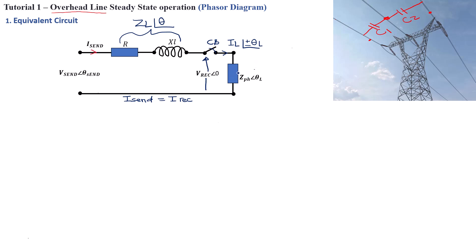Whether the load is purely resistive, capacitive, or inductive, or a mix of all, that defines the current angle. That cannot be equated to the angle from the sending end. Now, having defined all the parameters we need for this short transmission line, we can go ahead and draw the phasor diagram for the equivalent circuit with a resistive load. Let's emphasize that the phasor diagram we're going to draw will be for a purely resistive load.